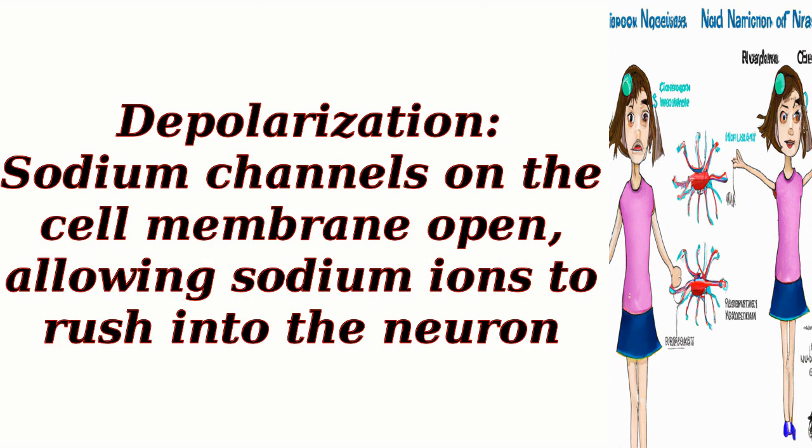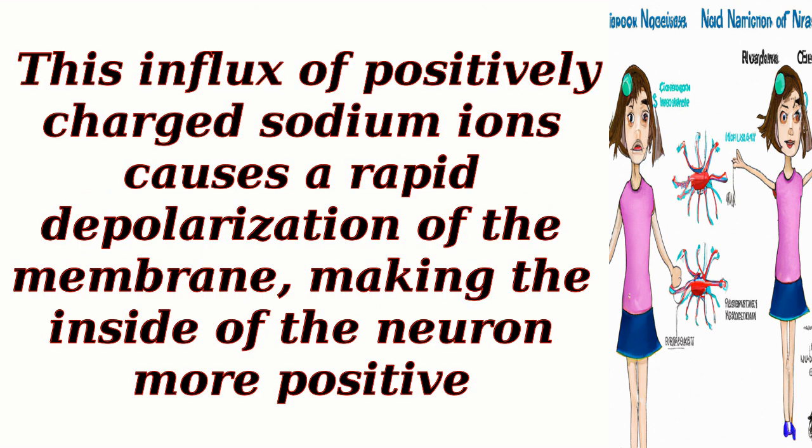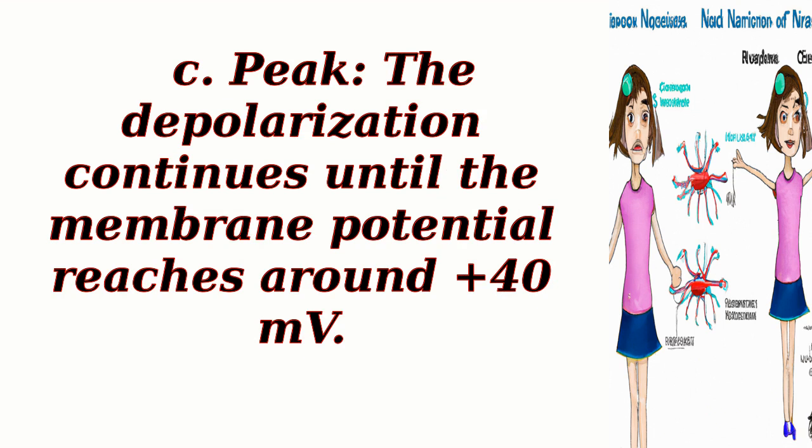Depolarization: Sodium channels on the cell membrane open, allowing sodium ions to rush into the neuron. This influx of positively charged sodium ions causes a rapid depolarization of the membrane, making the inside of the neuron more positive. The depolarization continues until the membrane potential reaches around +40 millivolts.